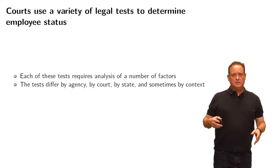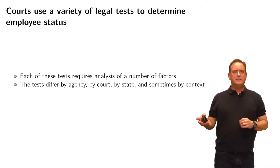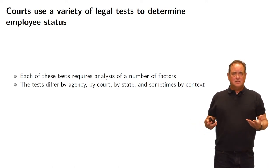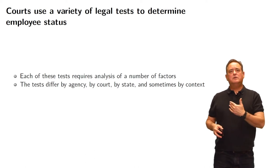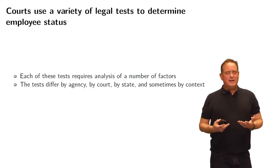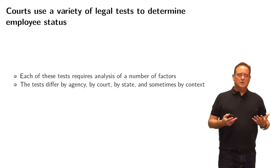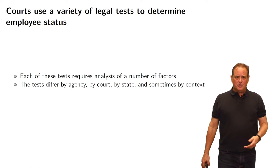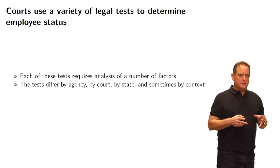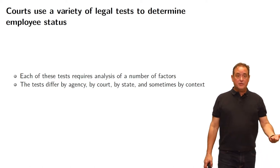The IRS uses one test for questions involving the Internal Revenue Code. The National Labor Relations Board uses another test. The Department of Labor in enforcing the FLSA uses yet another test. These tests can differ according to a number of factors, making it very difficult for employers. The generic answer is always that yes, this person is an employee — that should be the default answer, because if one agency determines that the workers are employees, other agencies can use that same determination and execute the same penalties.